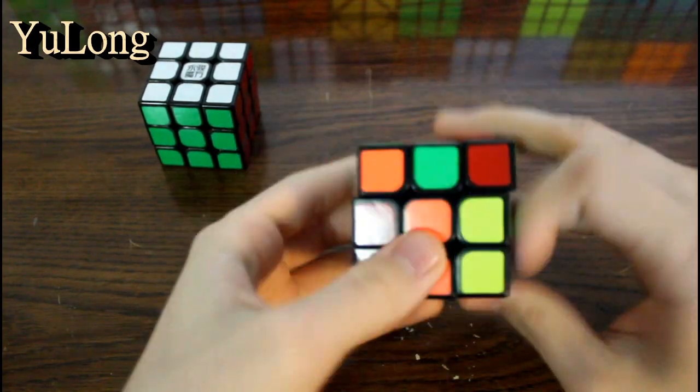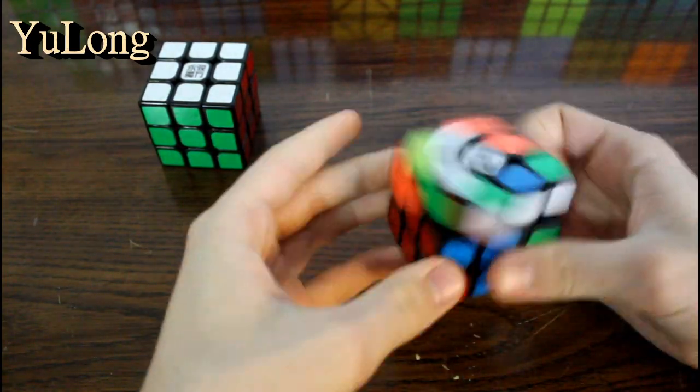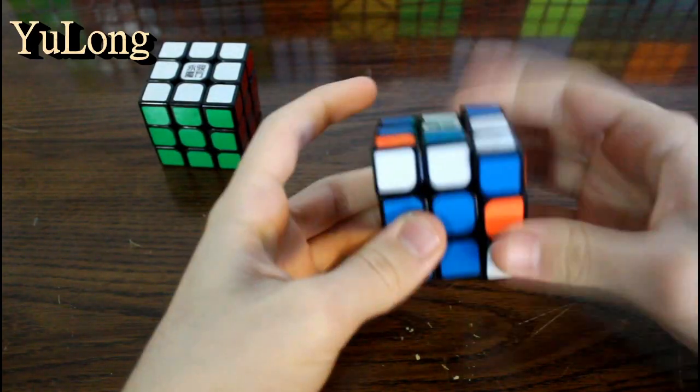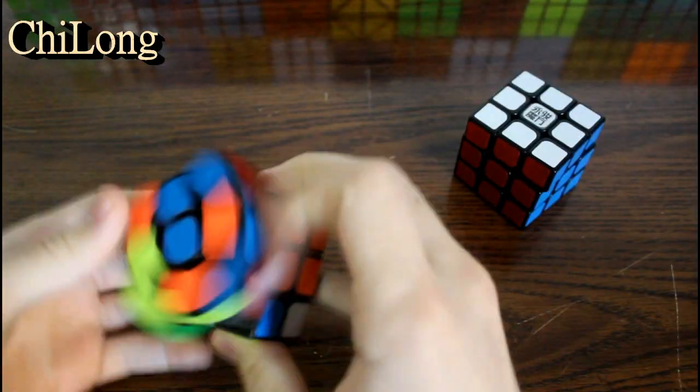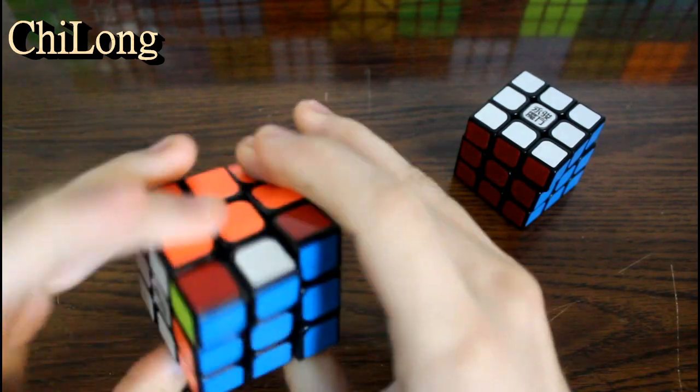The turning on both of these cubes is pretty fast. The Yulong does tend to be faster though, which leads me to turn out of control sometimes because it is so fast. I find myself liking the Qilong more on the speed, but it's really all personal preference at this point. They're both really fast.